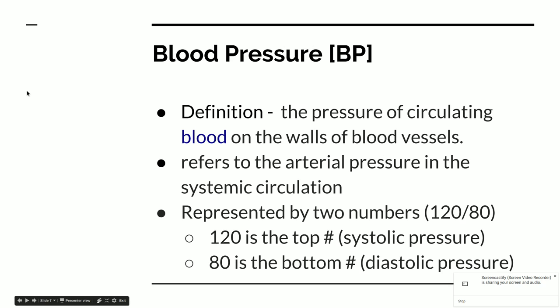Blood pressure is the pressure of the circulating blood on the walls of the blood vessels. This refers to the arterial pressure in systemic circulation — in the arteries throughout the body — which is why we measure it on the upper arm. It's represented by two numbers; we often think of it as 120 over 80. The top number, 120, is the systolic pressure when the ventricles are contracting, so it's greater. The bottom number, 80, is the diastolic pressure when the ventricles are relaxing, so there's less pressure in the arteries.